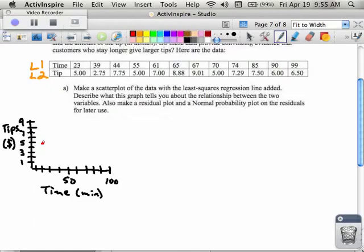Then at 39 minutes, $2.75. And then 44 minutes, $7.75. 55 minutes, $5. 61 minutes, $7. 65 minutes, $9. 67 minutes, $9.01. 70 minutes, $5. 74 minutes, $7.29. 85 minutes, $7.50. 90 minutes, $6. And 99 minutes, $6.50.